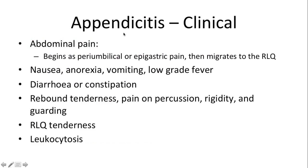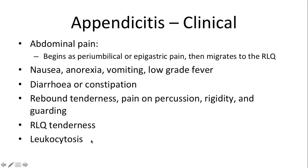Patients often present with abdominal pain described as beginning in the peri-umbilical or epigastric area, which then migrates to the right lower quadrant. There is often associated nausea, anorexia, vomiting, and low-grade fever. Diarrhea or constipation can also occur, though less commonly. On examination, typical findings are rebound tenderness, right lower quadrant tenderness, and pain on percussion. Rigidity and guarding may be seen with associated peritonitis, and blood tests typically show leukocytosis.